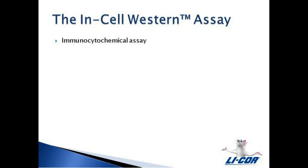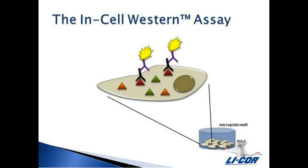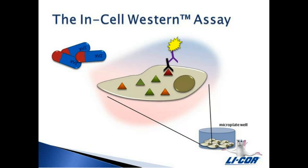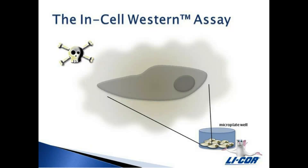The InCell Western is an immuno-cytochemical assay. It uses target-specific primary antibodies and infrared-labeled secondary antibodies to detect proteins, just as a standard Western blot does. But in the case of the InCell Western, proteins are detected in their cellular context. Working with the cellular environment allows researchers to fully evaluate conditions, such as the functional effects of drug compounds, and address other cellular issues, such as cell permeability and toxicity in their experiments.